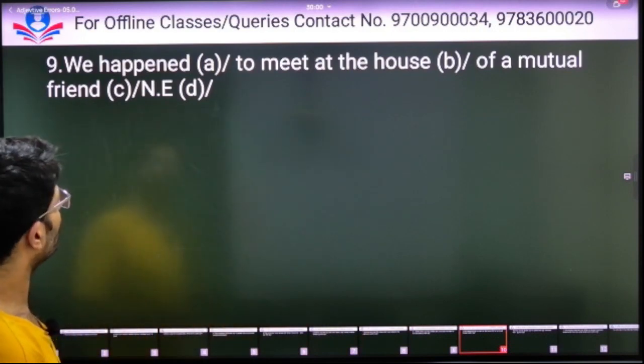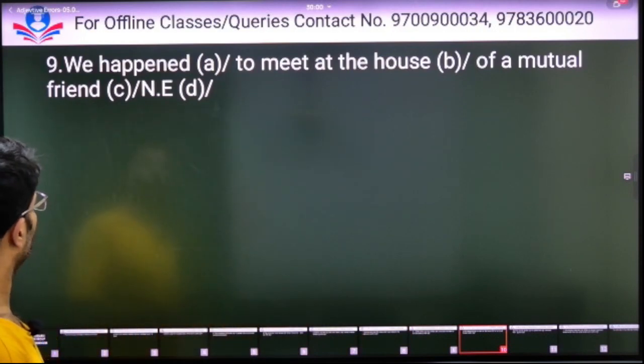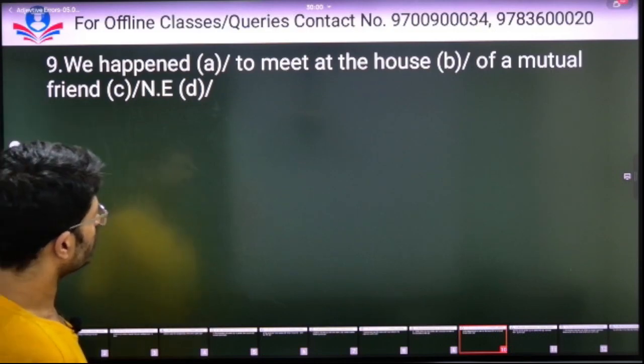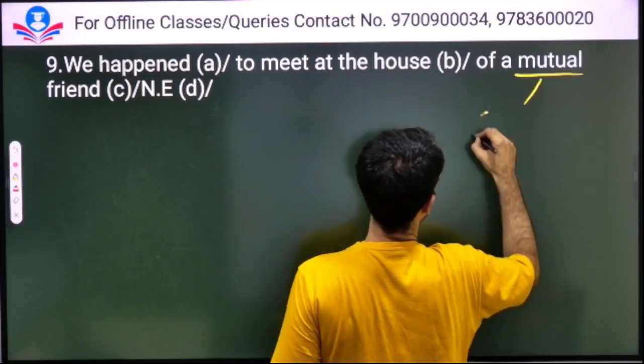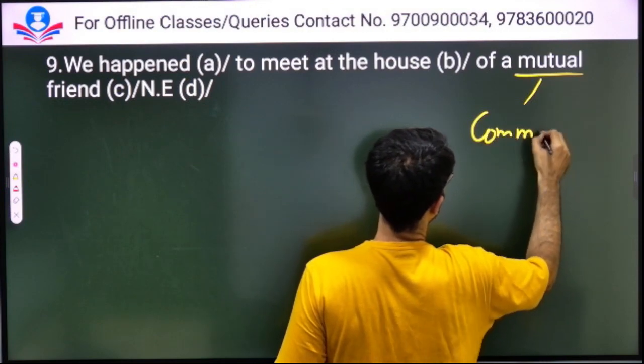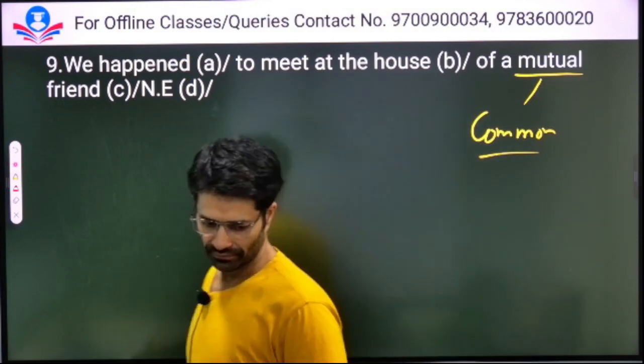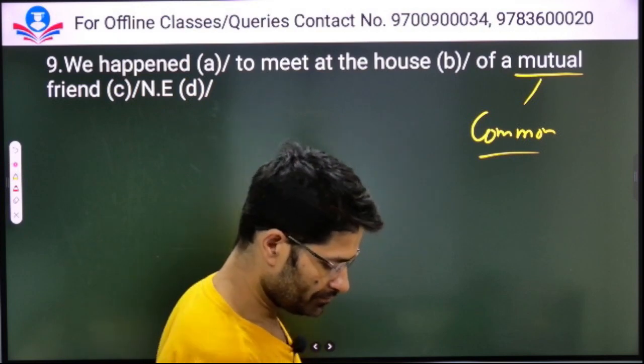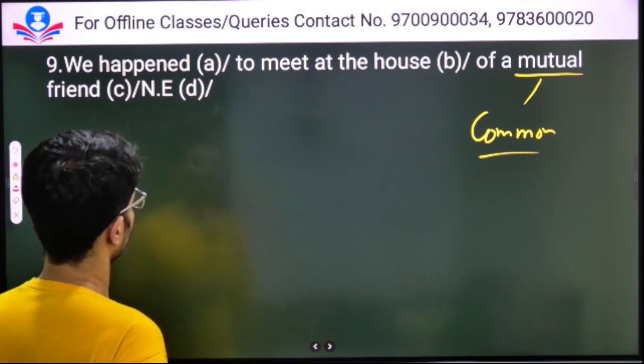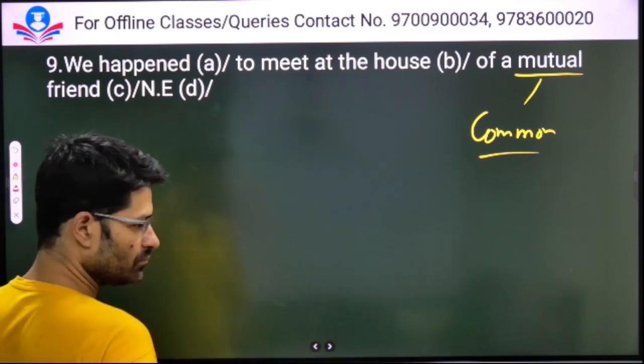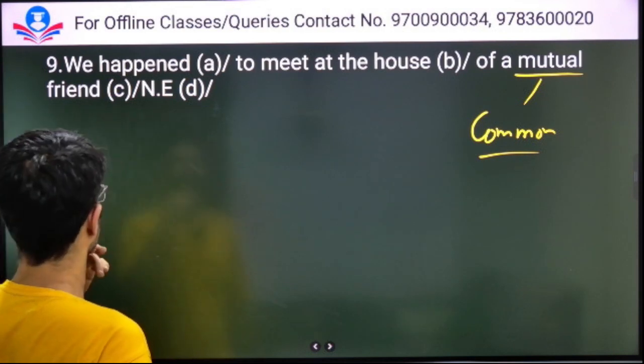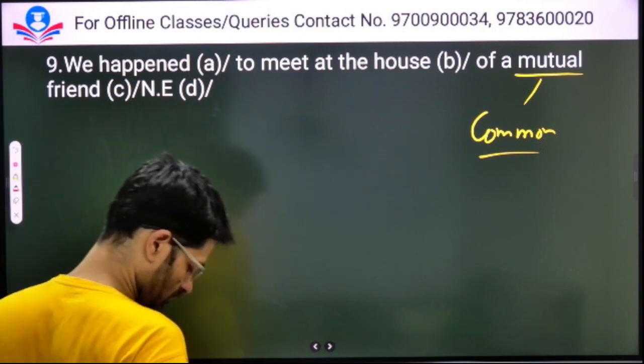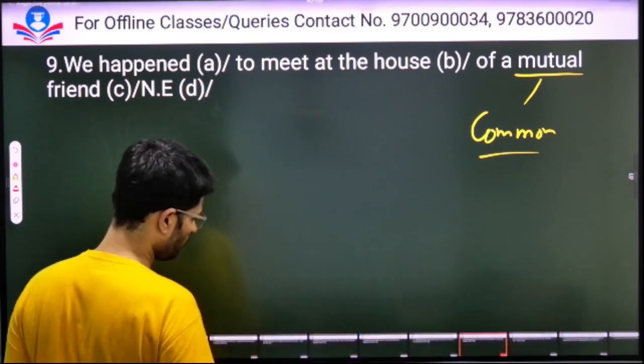We happen to meet at the house of a mutual friend. It should be 'common friend', not 'mutual'. 'Common' means shared by many.